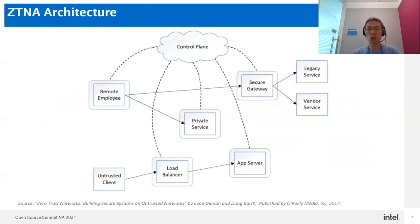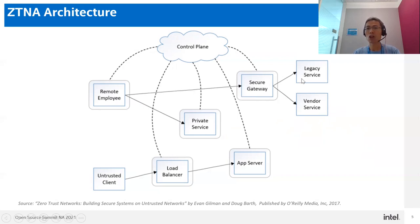This is a Zero Trust network access architecture to fix these industry challenges. It was proposed about 10 years ago, but in recent years it has become more popular and the predominant industry trend. In this architecture, the secure gateway builds secure channels with remote employees, who access backend or vendor services through it. New applications or services can run directly on private servers, and private servers can communicate with employees directly.